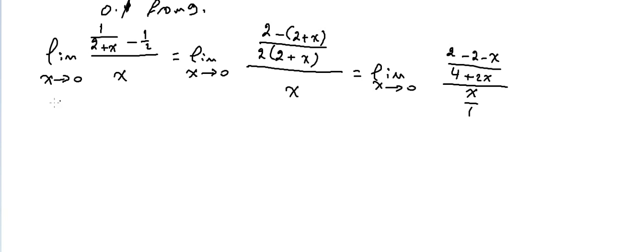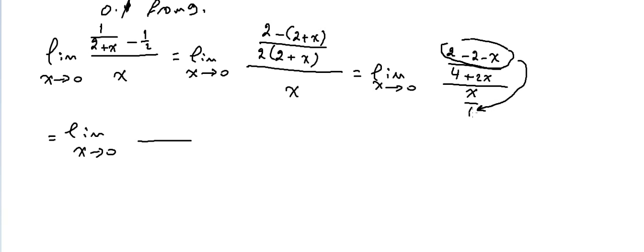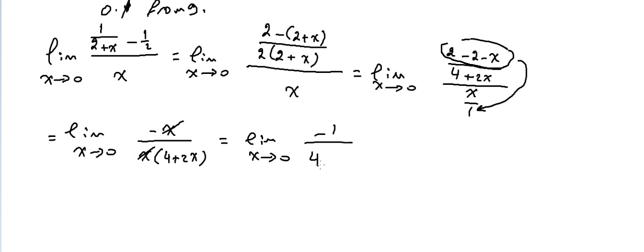That simplifies to limit as x→0 of [2 - 2 - x] over [x(4+2x)], which is limit of -x over x(4+2x). We can simplify the x, and we end up with limit as x→0 of -1 over (4+2x).